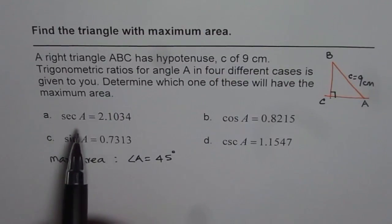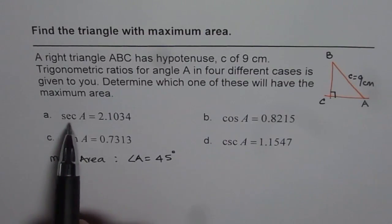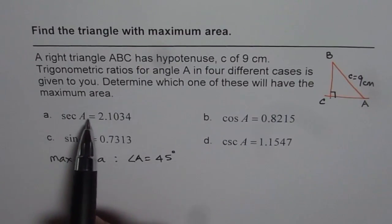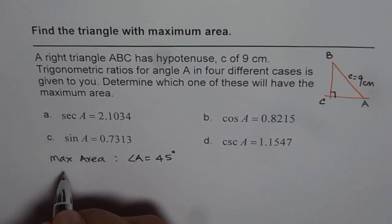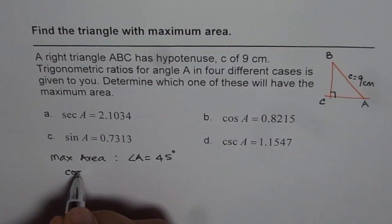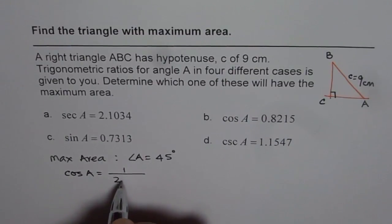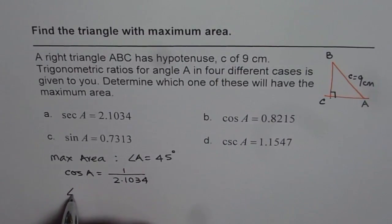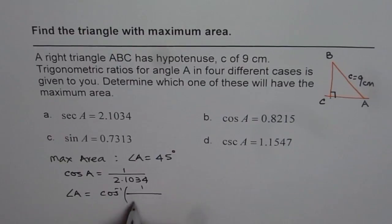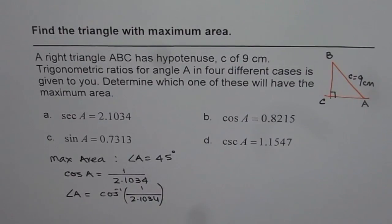Now, how to find angle A when you are given secant A. Now, secant A is 1 over cos A, right? So we can say from here, cos A is equals to 1 divided by 2.1034. And therefore, angle A will be equals to cos inverse of this number, 1 divided by 2.1034. You can find this answer and get the value of A.